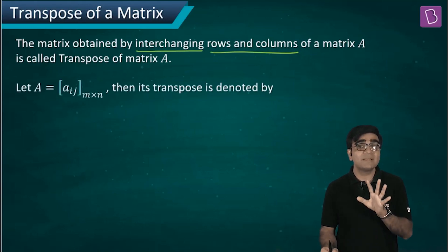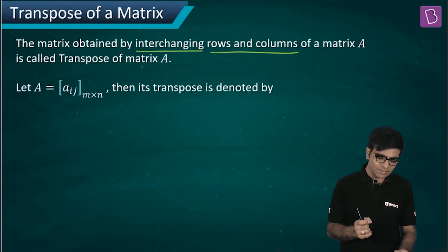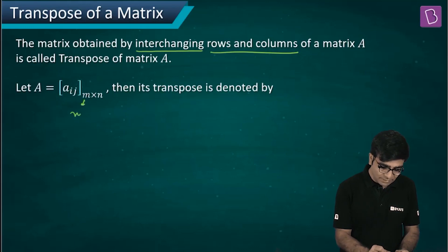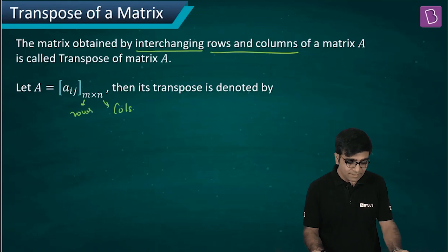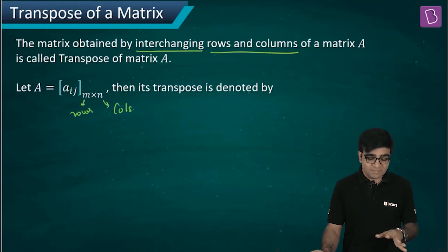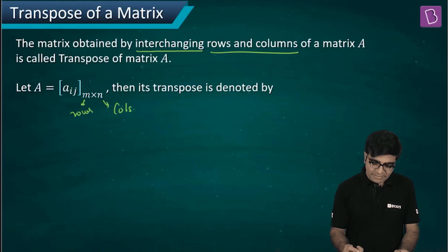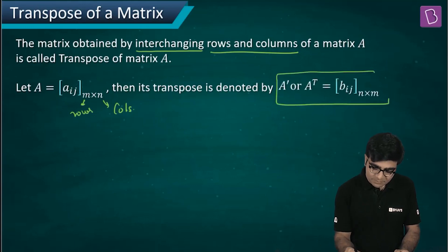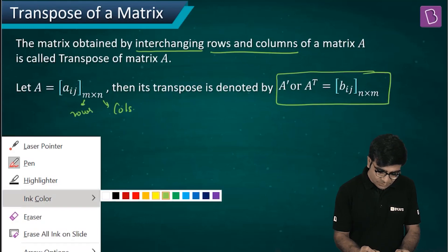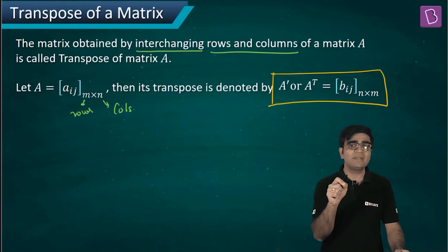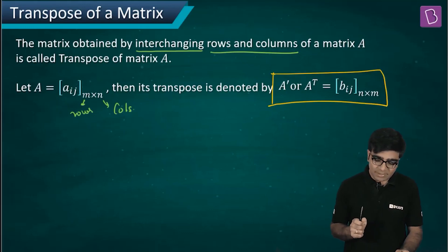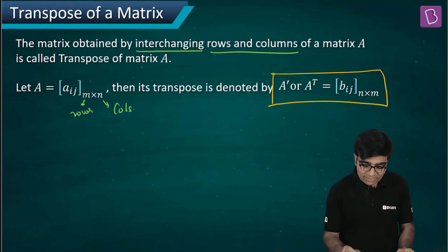In the general representation, if capital A equals aij of order m cross n, then I have m rows and n columns. Its transpose is denoted by A dash or A transpose or A^T. This is the symbol for A transpose — A prime, A dash, or A^T.